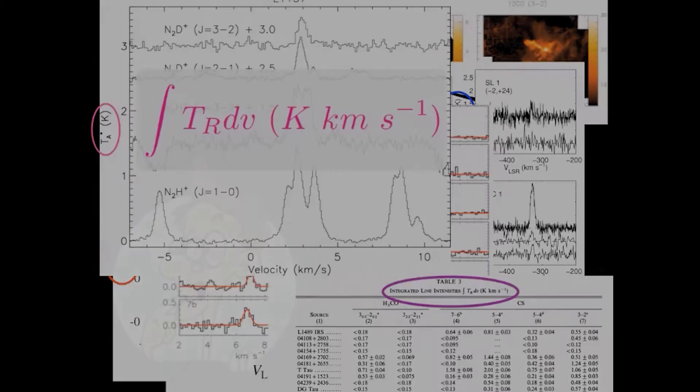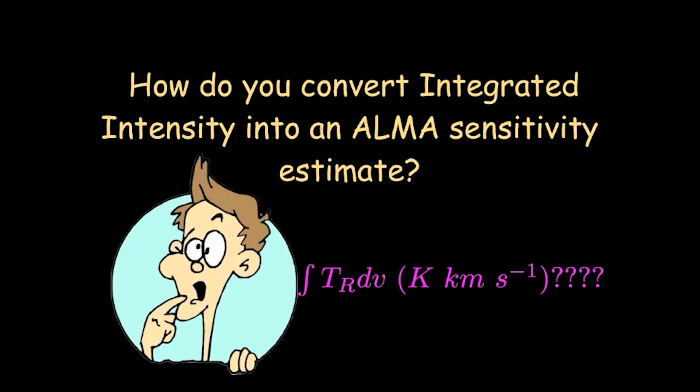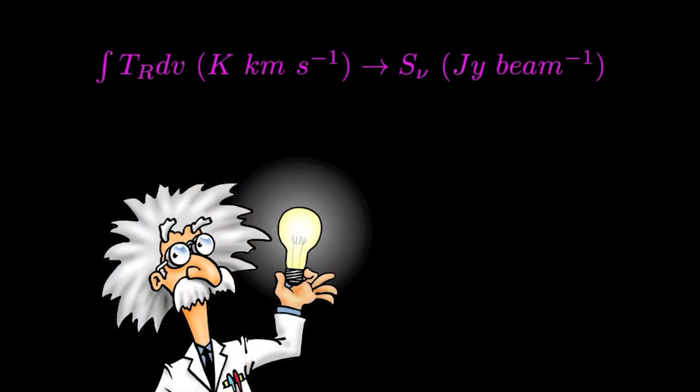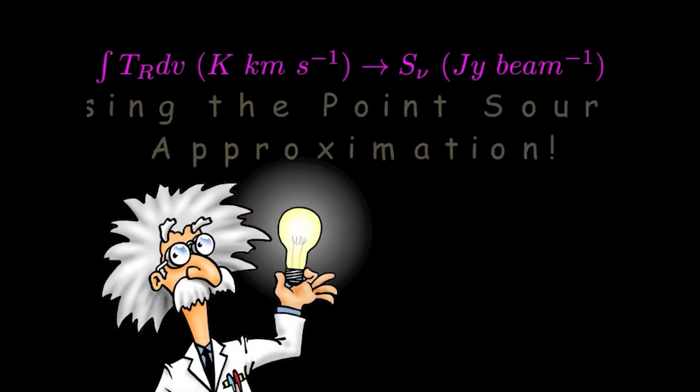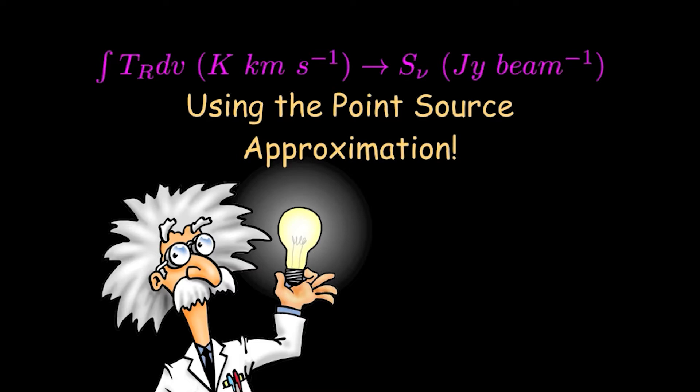The simplest, if not most rigorous, way to use an antenna temperature to estimate an ALMA observation, is first to convert the antenna temperature into a flux density using the point source approximation, usually written like this.